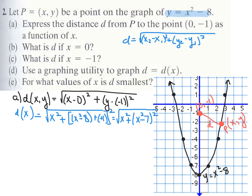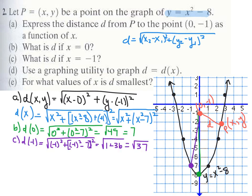Using this function for d, parts b and c are just plugging in values for x. For part b, plug in x equals 0: you get the square root of 0 squared plus (0 squared minus 7) squared, which equals the square root of 49, or 7. That's the distance between (0, -1) and the vertex at (0, -8). Part c uses x equals negative 1 — that point is (-1, -7) — and plugging in gives the square root of 37.